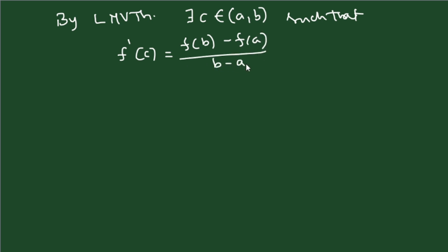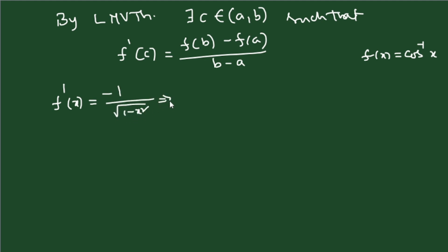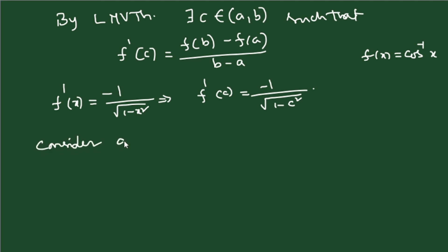Now, f(x) = cos⁻¹(x), so f'(x) = −1/√(1 − x²), and therefore f'(c) = −1/√(1 − c²). Whenever you solve this type of problem, you start with a < c < b, since c belongs to the open interval (a, b). This means we need to manipulate a < c < b to get −1/√(1 − c²) in the middle.